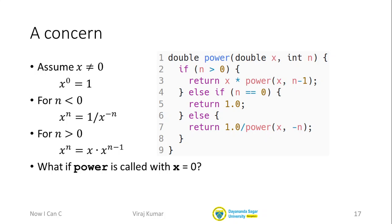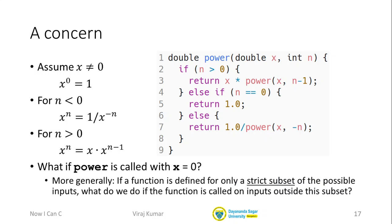So this is actually an example of a more general problem where, from a mathematical perspective, we may want to define a function on only a very narrow set of inputs. But when we try and translate that function into C, we have to specify our arguments of the type double or int and so on. And this may allow additional arguments which the mathematical definition actually forbids. So what do we do if our function is called on inputs for which it is not mathematically defined?